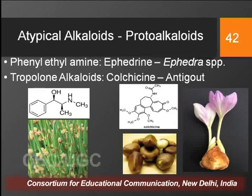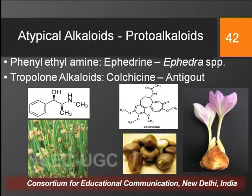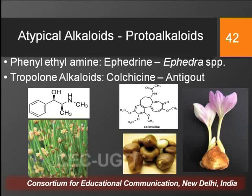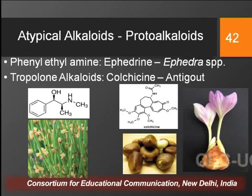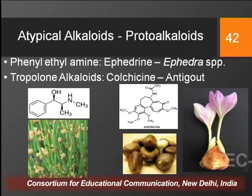Proto alkaloids are further of two major types: phenylethylamine alkaloids and tropolone alkaloids. Phenylethylamine alkaloids are those having an ethylamine chain attached to the phenyl ring, as seen in the structure of ephedrine, which is obtained from different species of Ephedra, mainly Ephedra sinica. The ethylamine chain attached to the phenyl ring is what defines this class.